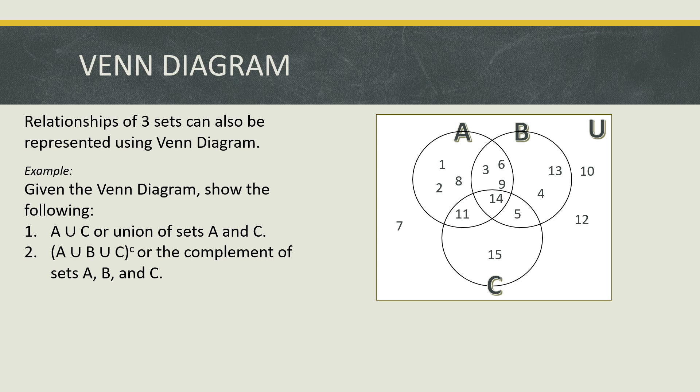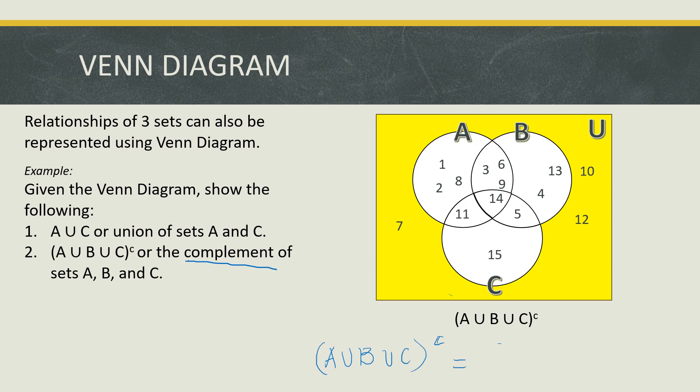How about A union B union C, and its complement? We can read it as the complement of the union of sets A, B, and C. The union of all three sets covers all three circles. But since we are looking for the complement of that union, we get the elements that belong to the universal set but not to sets A, B, or C. The complement of A union B union C has elements 7, 10, and 12 only.